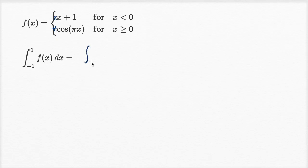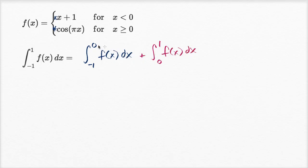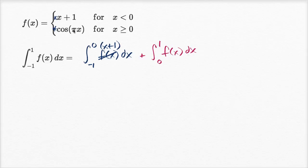This is going to be equal to the definite integral from negative one to zero of f of x dx, plus the integral from zero to one of f of x dx. I split it up this way because x equals zero is where f of x switches from being x plus one to cosine pi x. So on the interval from negative one to zero, f of x is x plus one, and from zero to one, f of x is cosine of pi x. Now we just have to evaluate each of these separately and add them together.